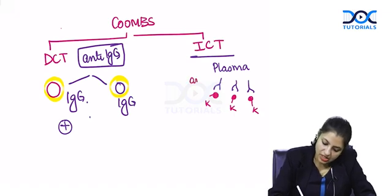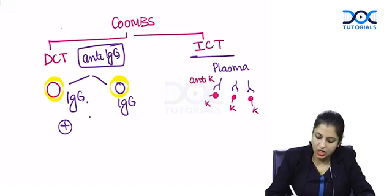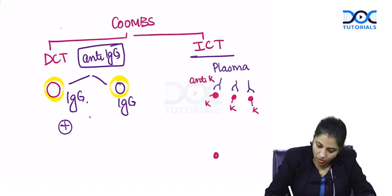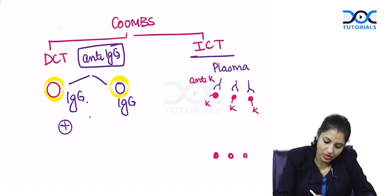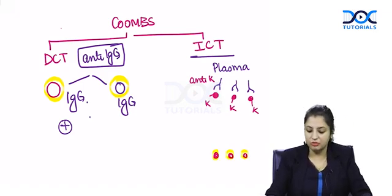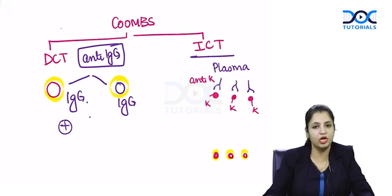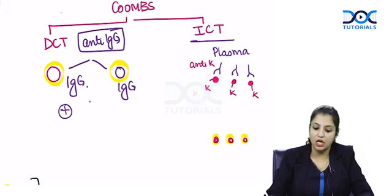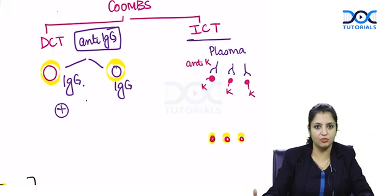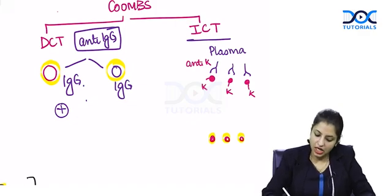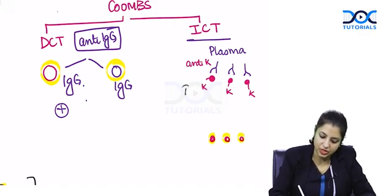If this antibody is anti-Kel antibody, immediately all these red cells will become coated by anti-Kel antibodies. Anti-Kel antibodies are IgG antibodies - they're incomplete antibodies. This was the first step we did: we added cells.